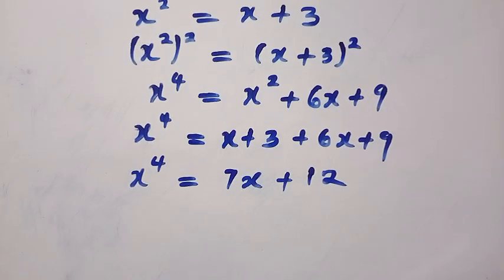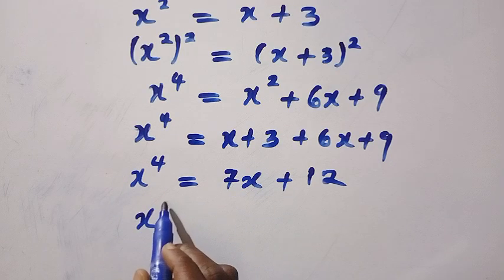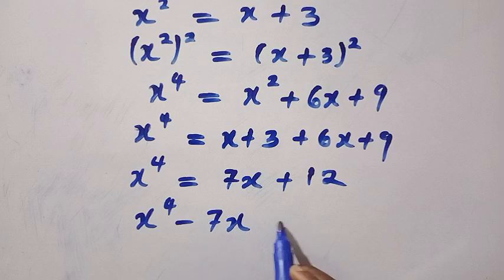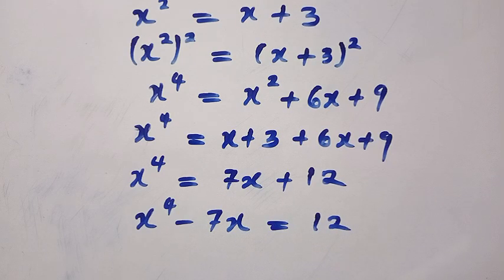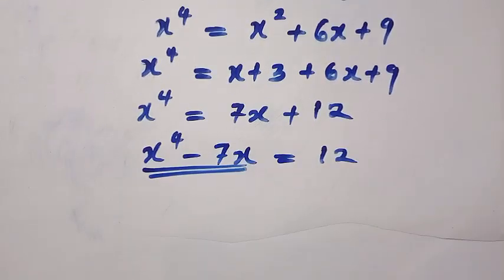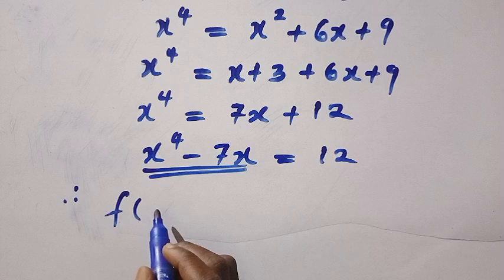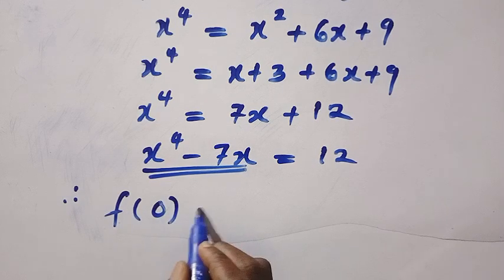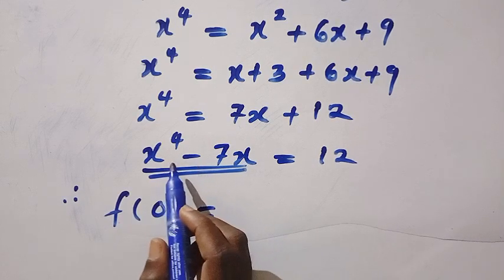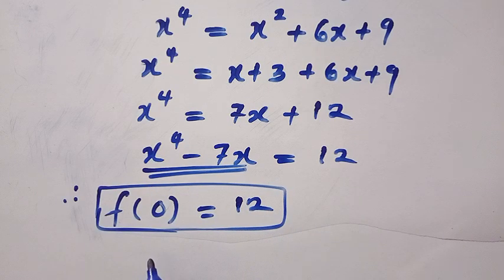By transferring 7x to the other side, we have x to the power of 4 minus 7x equals 12. This is very interesting — x to the power of 4 minus 7x equals 12. Therefore, we are going to have f of 0, because we set x squared minus x minus 3 equal to 0, and x to the power of 4 minus 7x equals 12. So f of 0 equals 12. This is the first method.